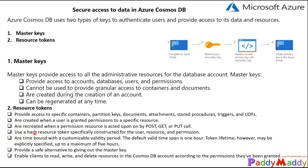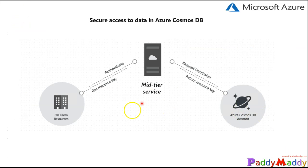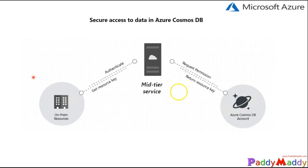Here is a typical design pattern whereby resource tokens may be requested, generated, and delivered to clients. In this example, the mid-tier service requests permission from the Cosmos DB account based on the user's identity.